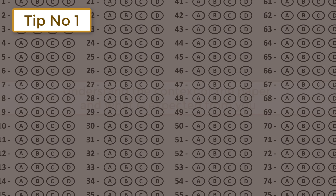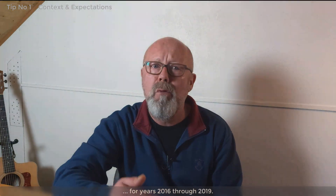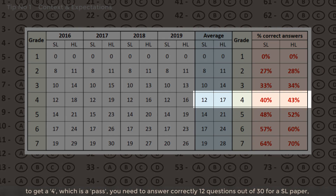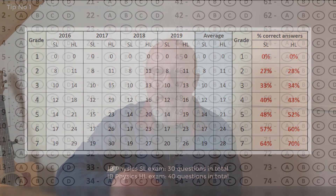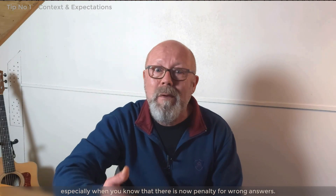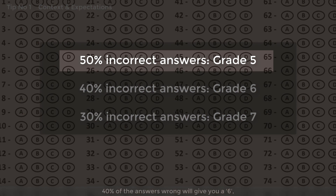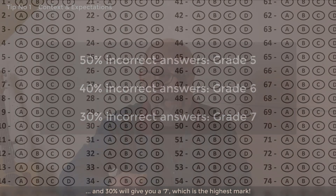Tip number one: understand the context of the paper and what is expected from you. I averaged the grade boundaries of the IB Physics multi-choice paper, Paper 1, for years 2016 through 2019. To get a 4, which is a pass, you need to answer correctly 12 questions out of 30 for a standard-level paper, and 17 out of 40 for a high-level paper. That's about 40–45%. If you get half of the answers wrong, you still get a 5. 40% wrong gives you a 6, and 30% wrong gives you a 7, the highest mark.